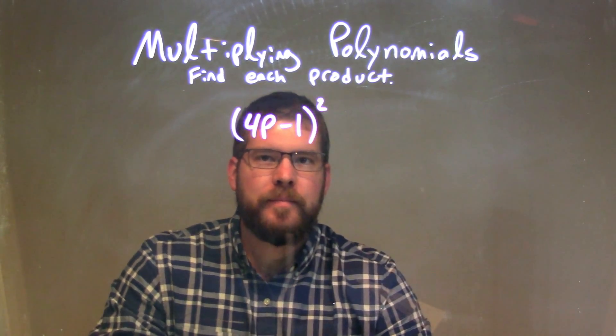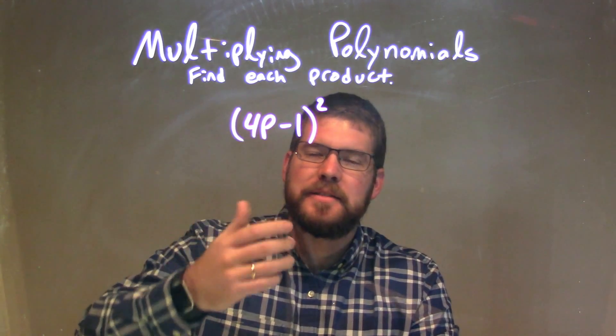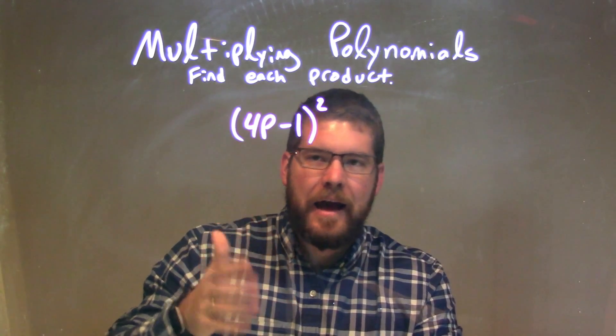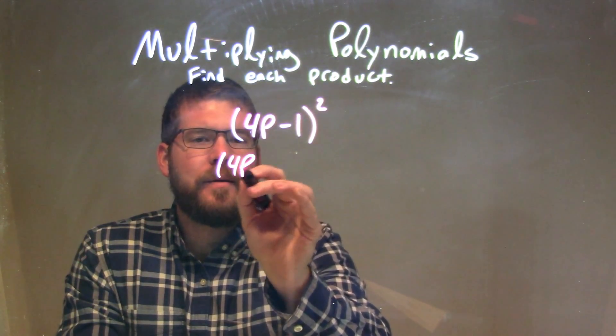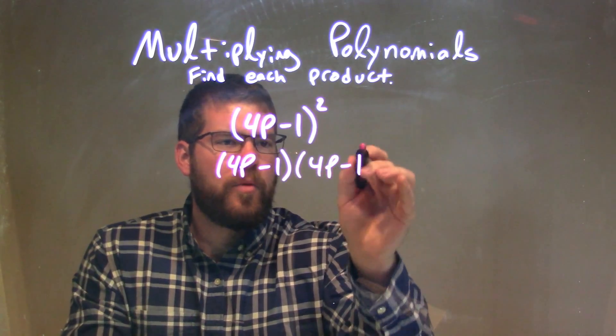When I first looked at that, I noticed that something squared is that thing multiplied by itself, like x squared is really x times x. I can rewrite this to be (4p - 1) times (4p - 1).